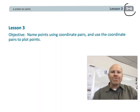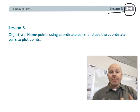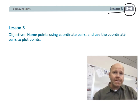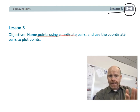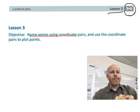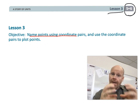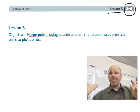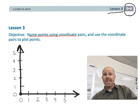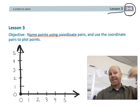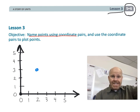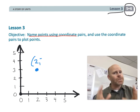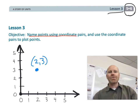This is fifth grade module six lesson three. In this lesson students are going to be naming points on a coordinate grid using ordered pairs, also called coordinate pairs. They're going to be plotting points — given plotted points they have to identify the ordered pairs, and given ordered pairs they have to plot the points. Let's get started.